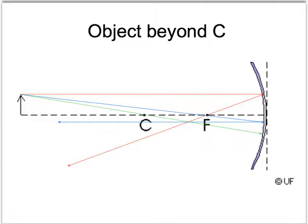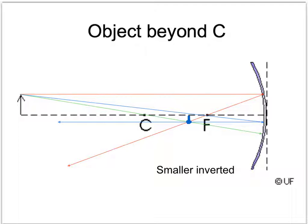The image's properties depend on where the object is placed. If we put the object really far away and draw those three rays — the one coming in straight out through F, in through F out straight, and in through C — you'll notice they meet at one point: that's the tip of your image. Drawing in the image arrow, you notice the image is much smaller, it's inverted, and it's real. To find where the image is, just measure the distance from the image to the mirror — that's your image distance.